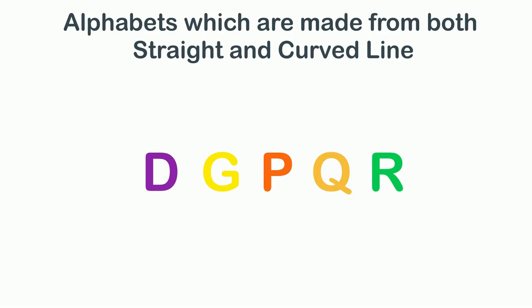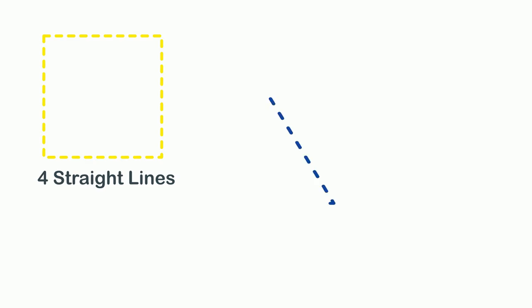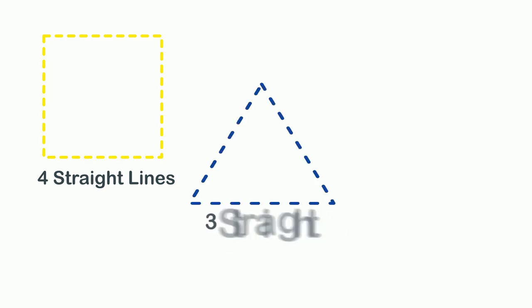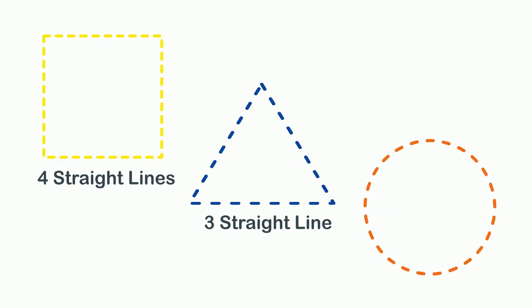All shapes are made up of lines. For example, a square consists of four straight lines, a triangle consists of three straight lines, and a circle consists of a curved line.